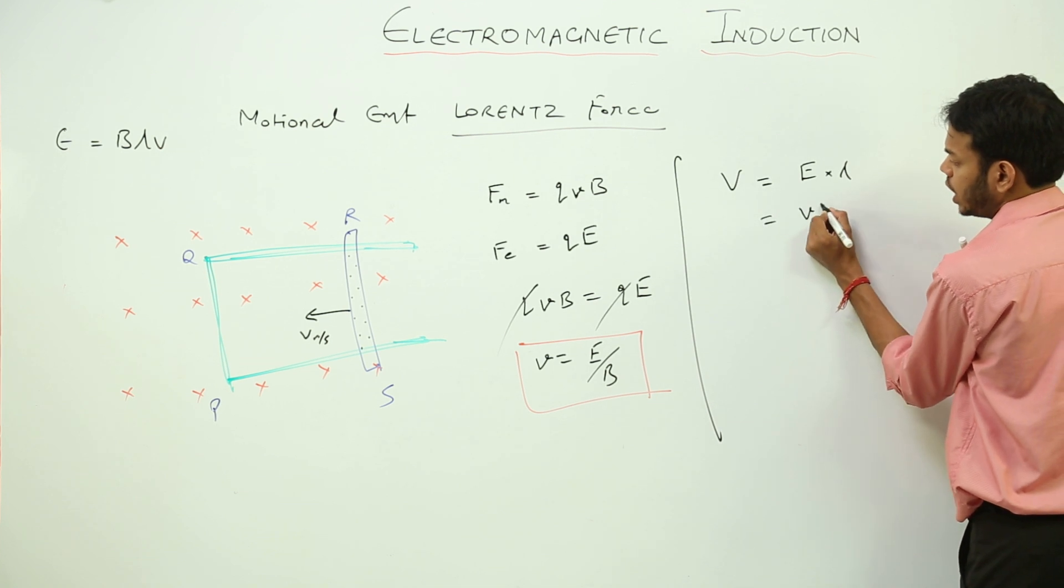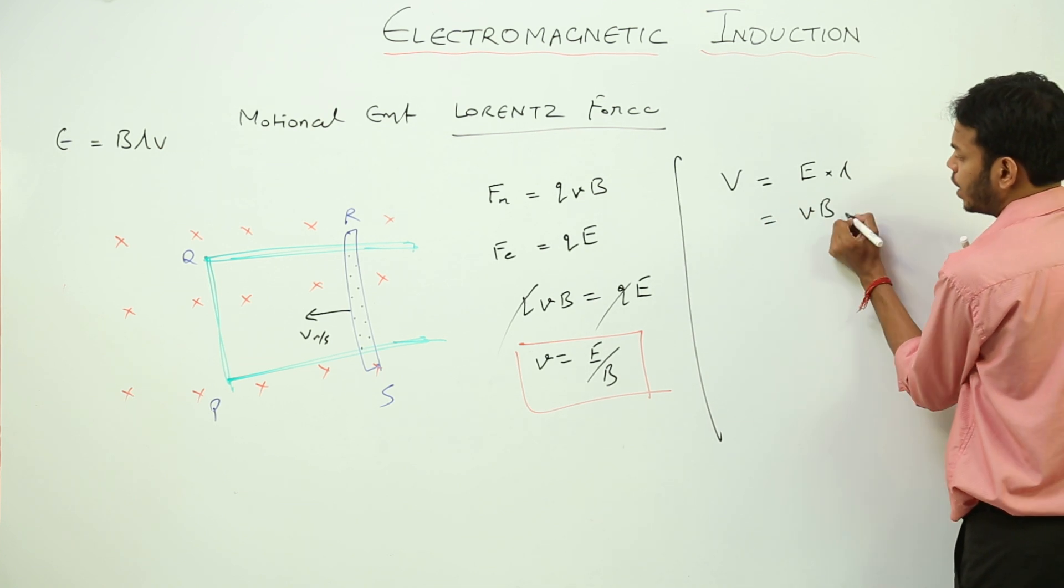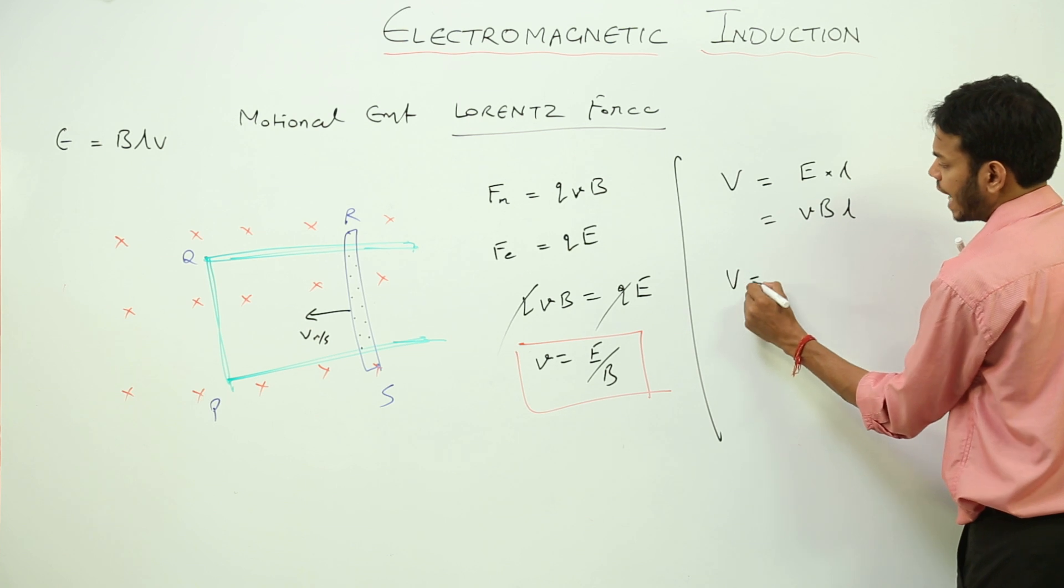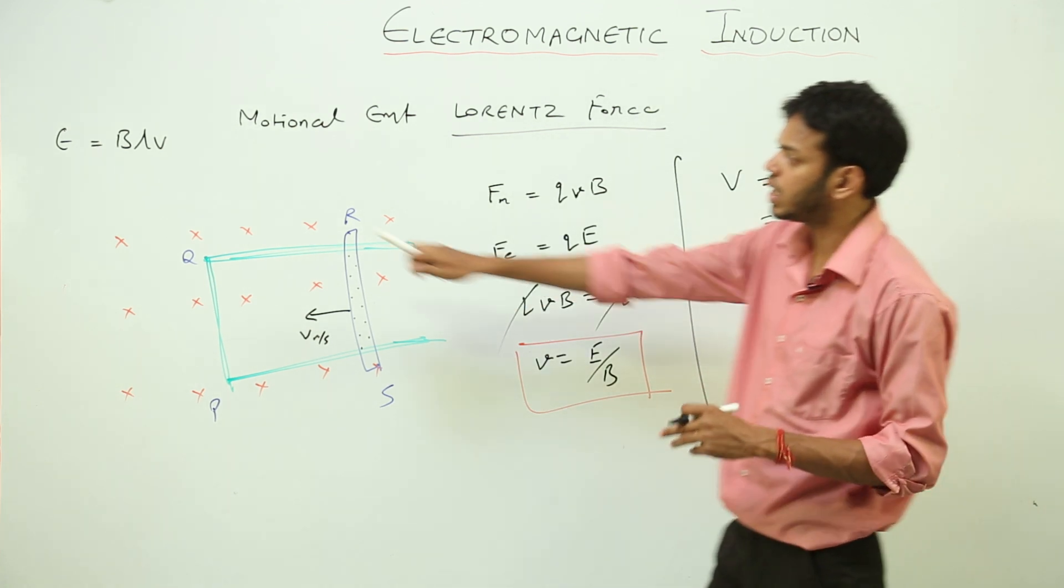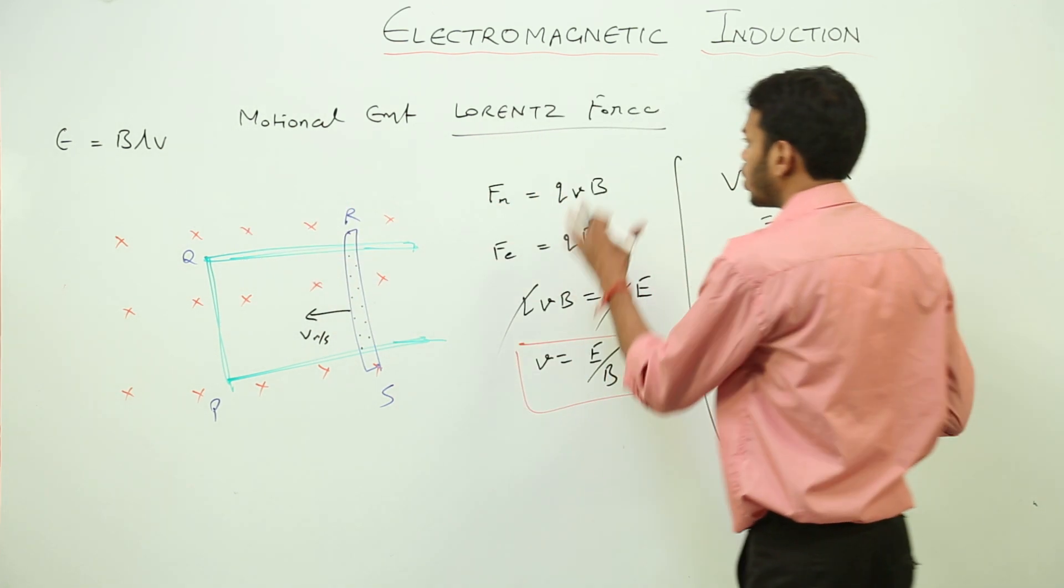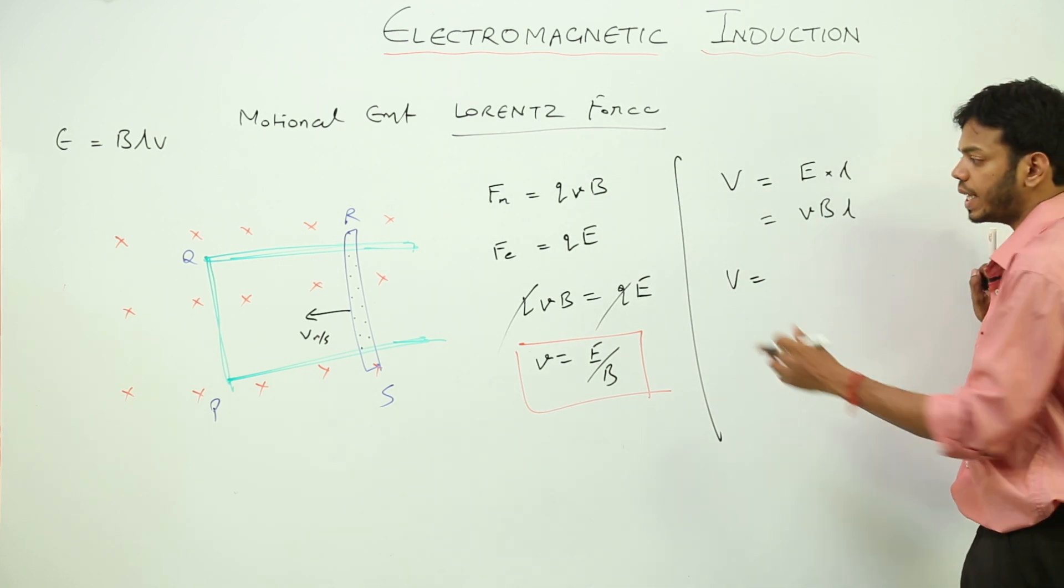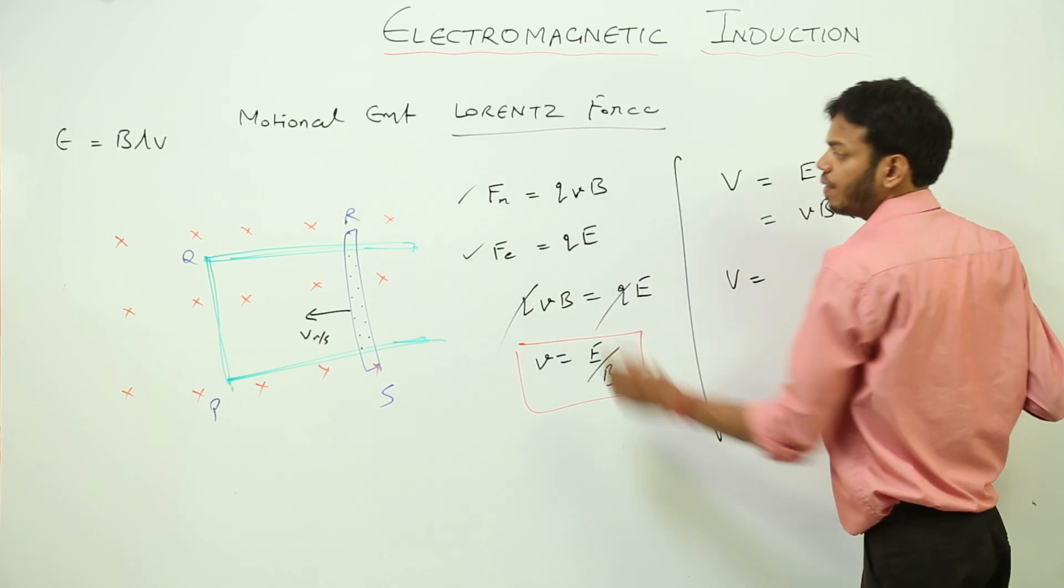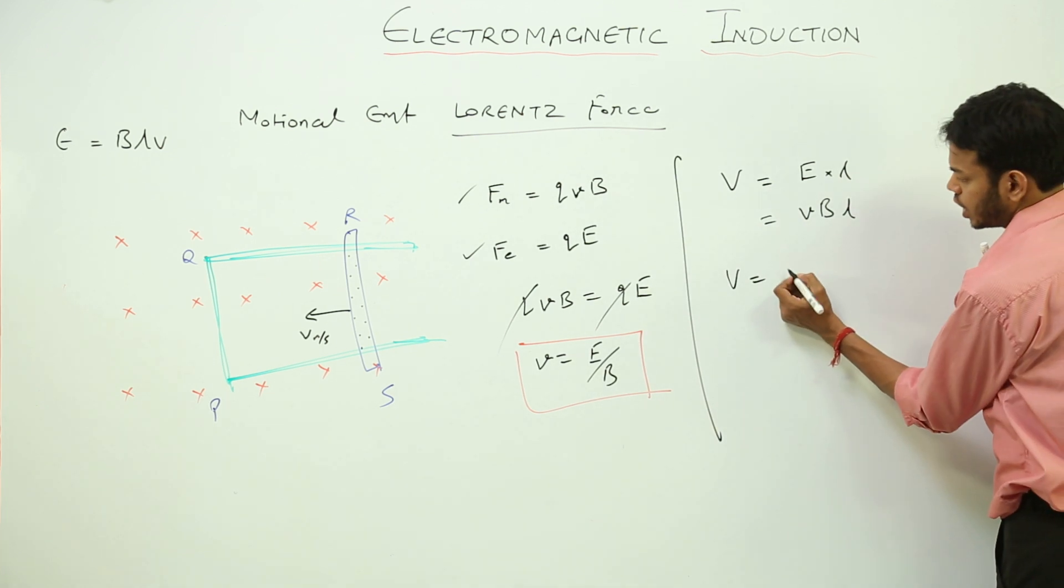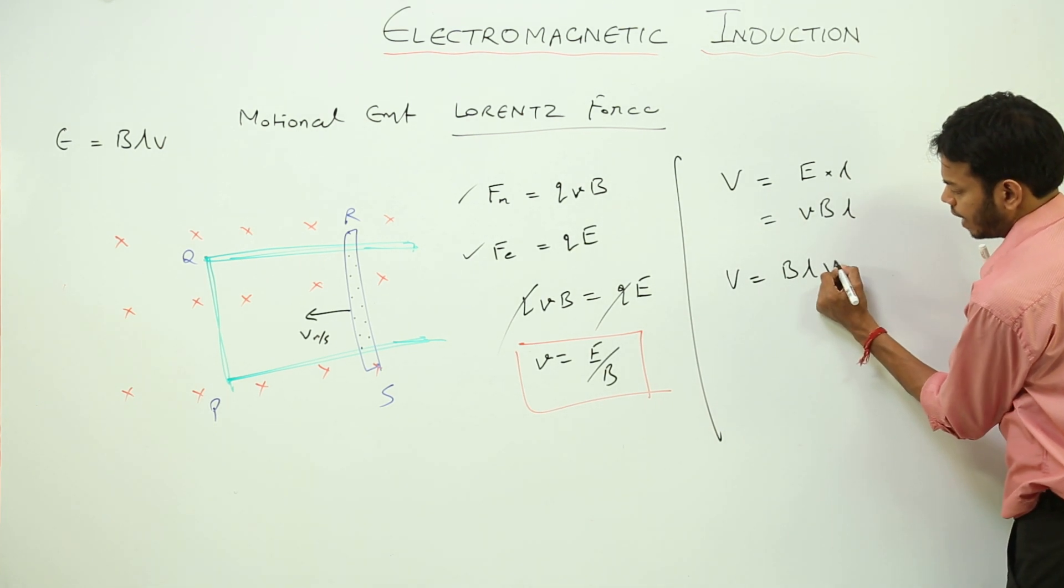Velocity magnetic field, that is electric field into L. So we have actually derived the same formula which is BLV through the Lorentz force. What was Lorentz force? When both electric and magnetic force acts on the charge. So B, L and V.